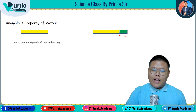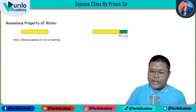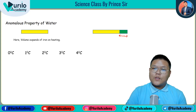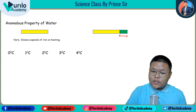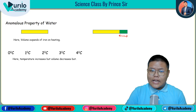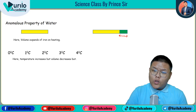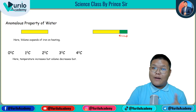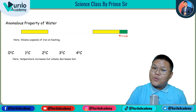This is the region of a familiar phenomenon — volume expands of iron on heating. But for water, at zero degrees centigrade — that is, ice — as temperature increases from one, two, three, four degrees, the volume actually decreases up to four degrees centigrade. So amazingly, this is the anomalous property of water.